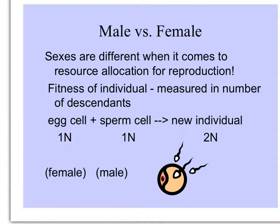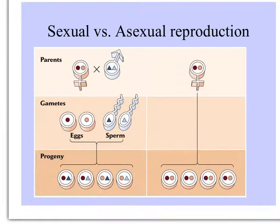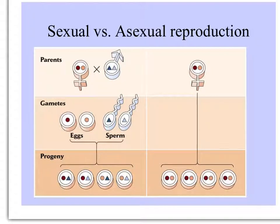to make a zygote that grows into a new individual that's diploid. This simple diagram shows how two distinct parents with different sets of chromosomes and different genes produce gametes that combine to make offspring different genetically from the parents.